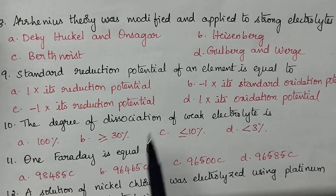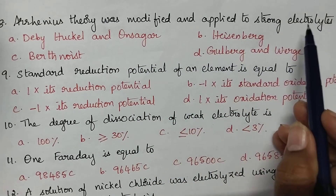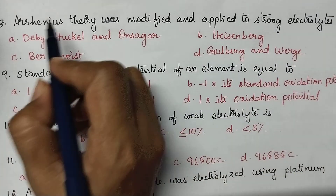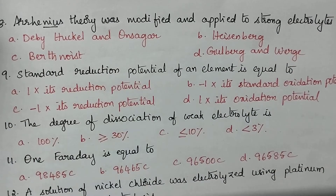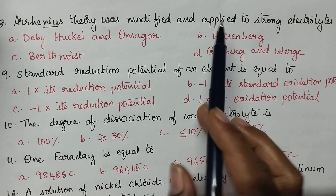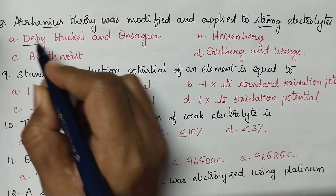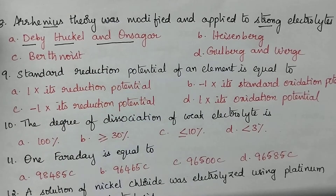Arrhenius theory was modified and applied to strong electrolytes by whom? Arrhenius theory explains the electrolysis of weak electrolytes; it was modified and applied to strong electrolytes by Debye, Hückel, and Onsager.